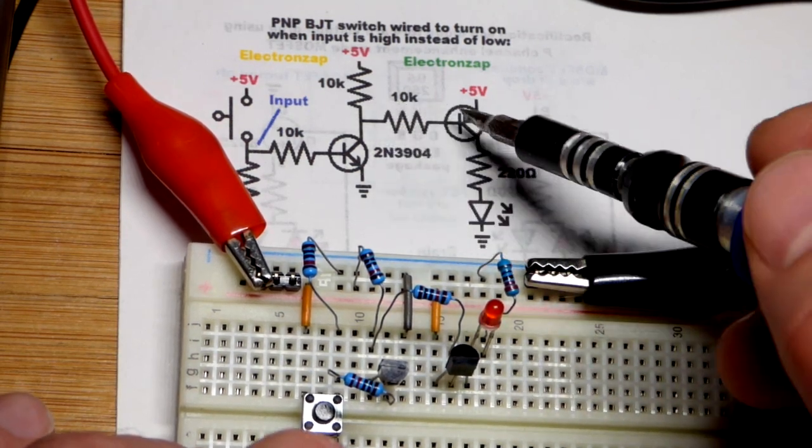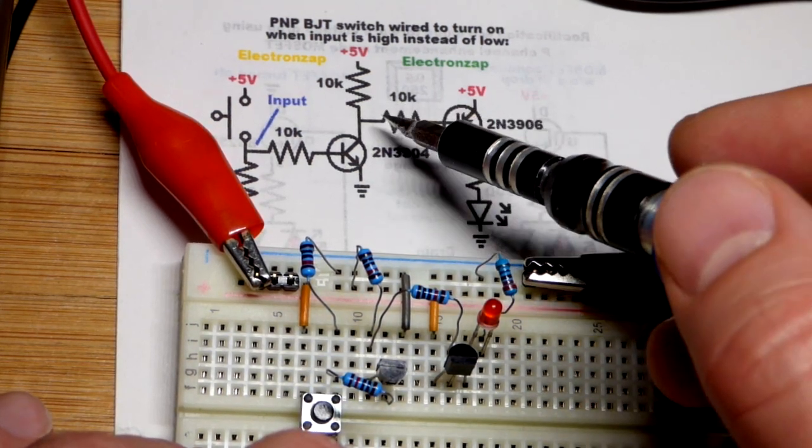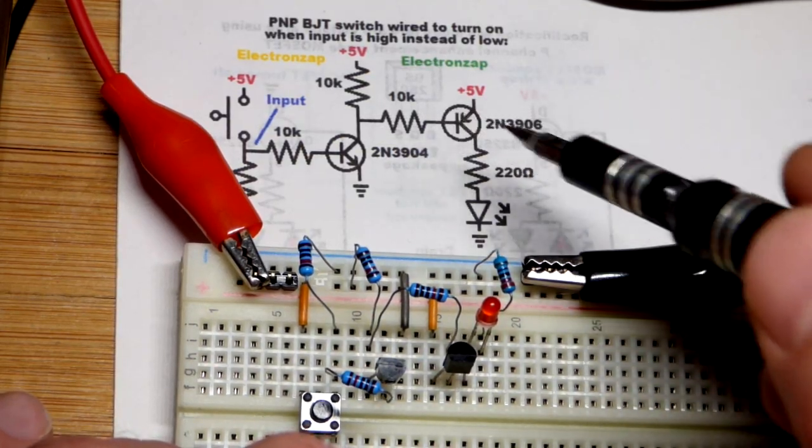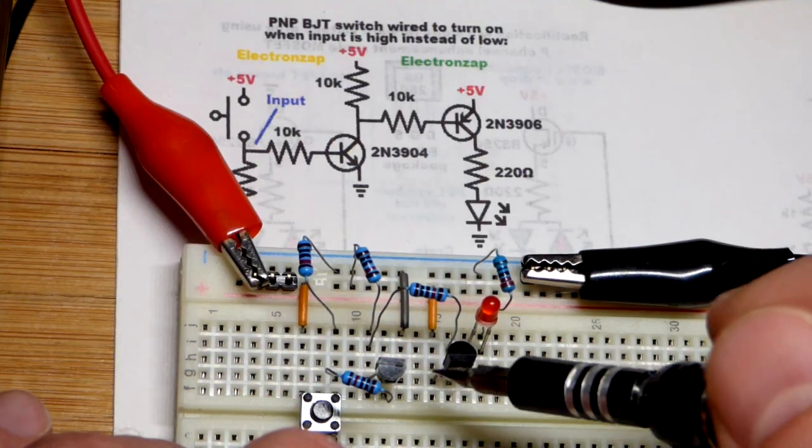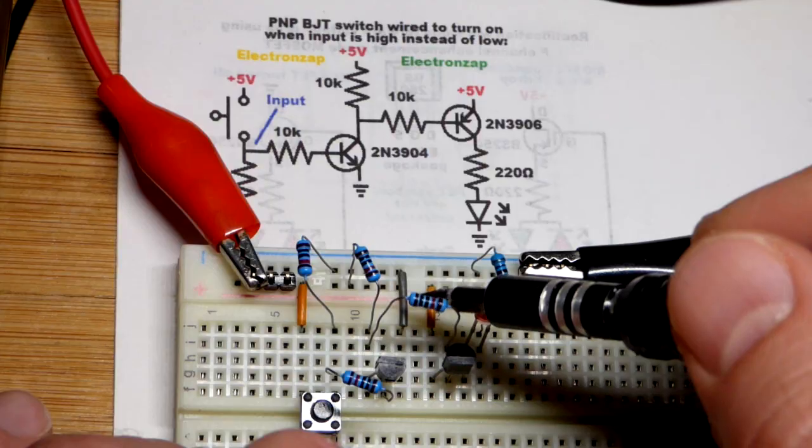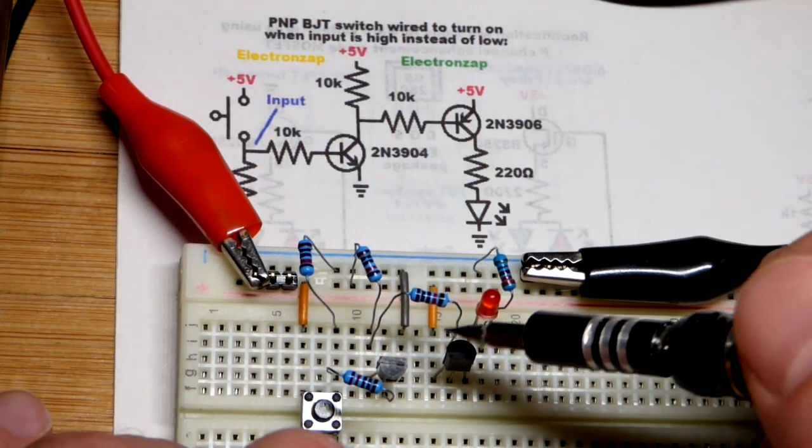We need the 10k resistor to limit current when we turn it on. The emitter goes to the positive supply - it's facing us with emitter to the left, base in the middle, collector to the right. You can see the positive supply and the resistor that sends the signal over to it.